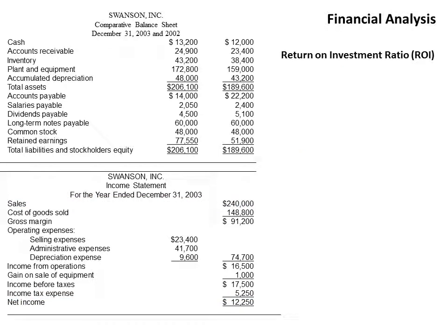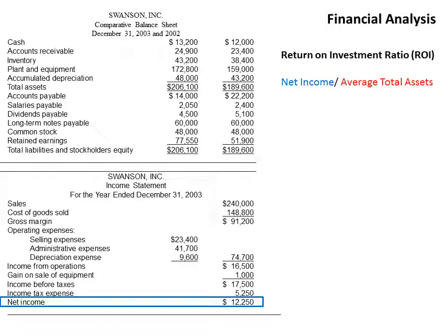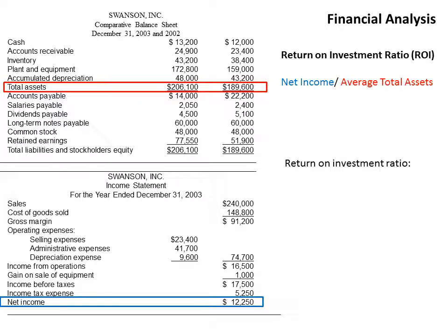Next is return on investment, the ROI ratio — net income divided by average total assets. Net income comes from the income statement. For average total assets, our balance sheet has two columns for year one and year two. Since it's an average, we add both together and divide by two. So our ROI is $12,500 divided by ($206,000 plus $189,600) divided by two, giving us 6.19%.